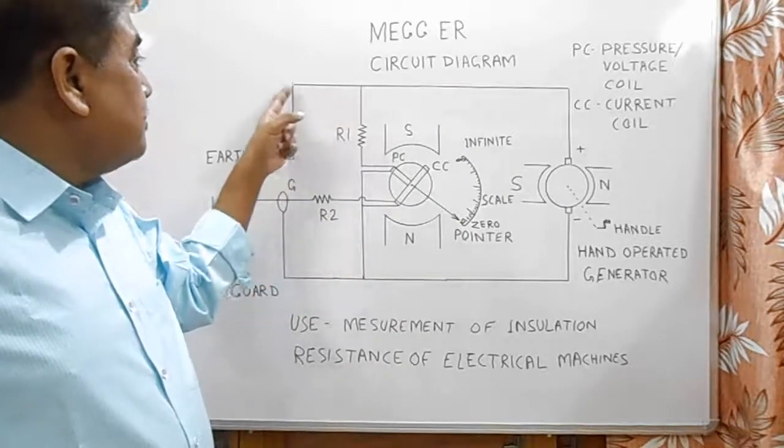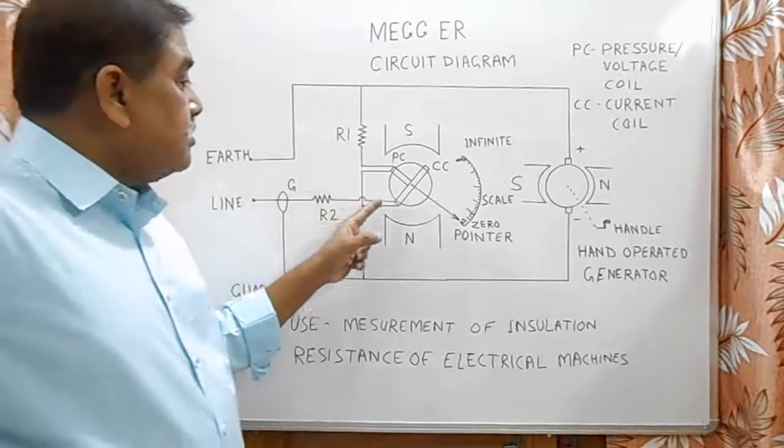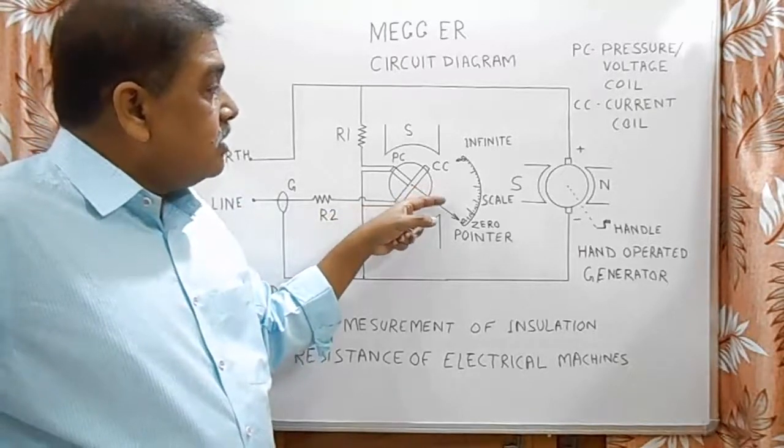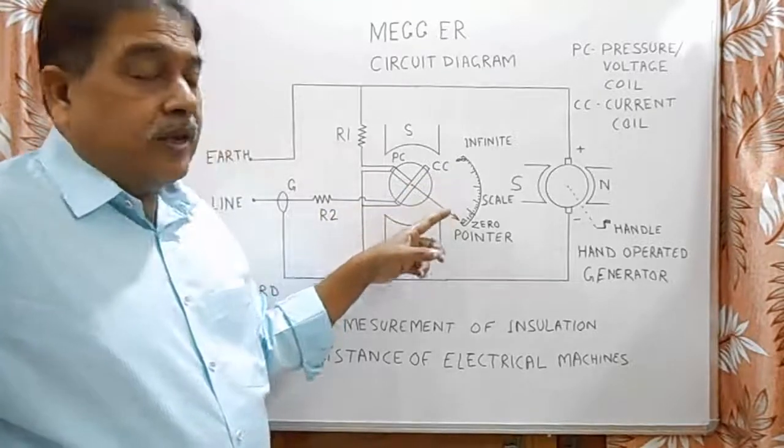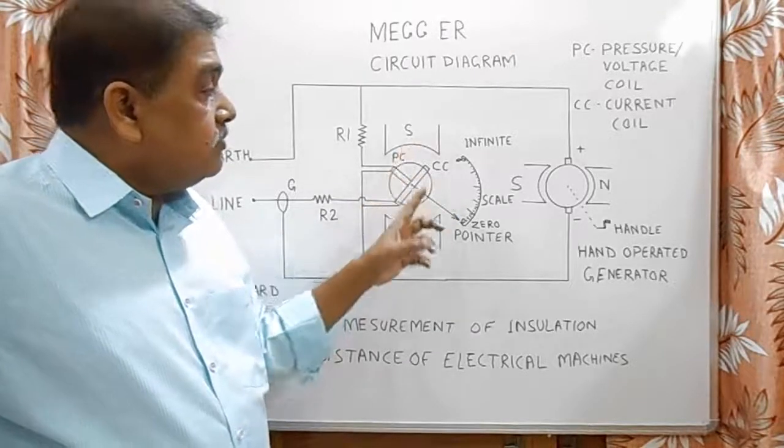When the pressure coil comes from this line through testing resistance to the R2 and returned back to the current coil. Current coil produces a torque in the direction of zero, and the pressure coil produces the torque in the direction of infinity.